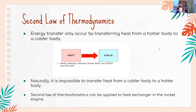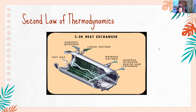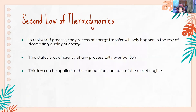The second law of thermodynamics can be applied to the heat exchanger in the rocket engine. From the figure shown, gaseous nitrogen and liquid oxygen are the colder bodies, while hot gas is the hotter body. Heat is transferred from the hot gas, resulting in the production of heated and expanded gaseous nitrogen and gaseous oxygen, which are then injected into the combustion chamber for combustion with fuel.